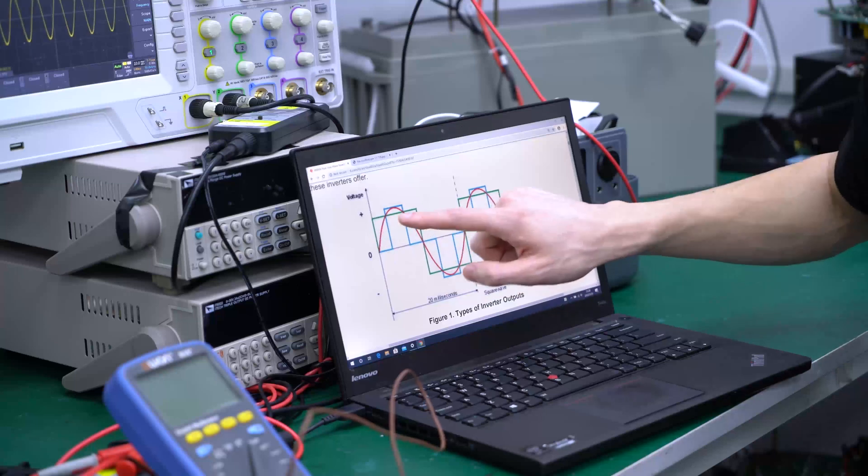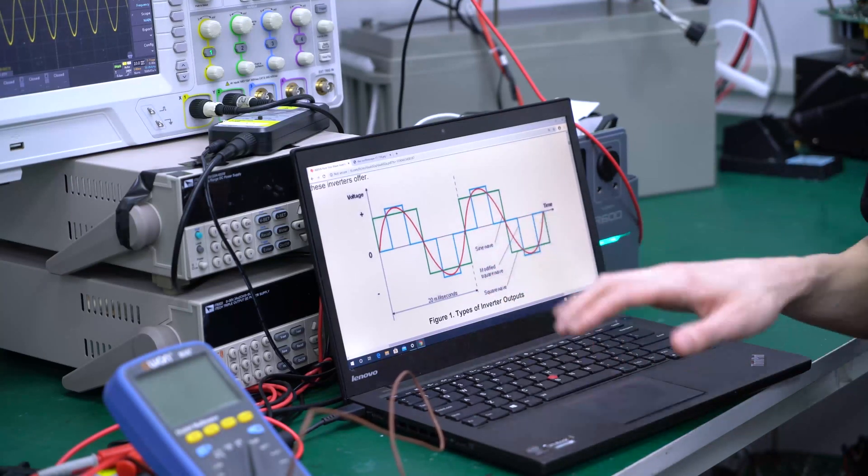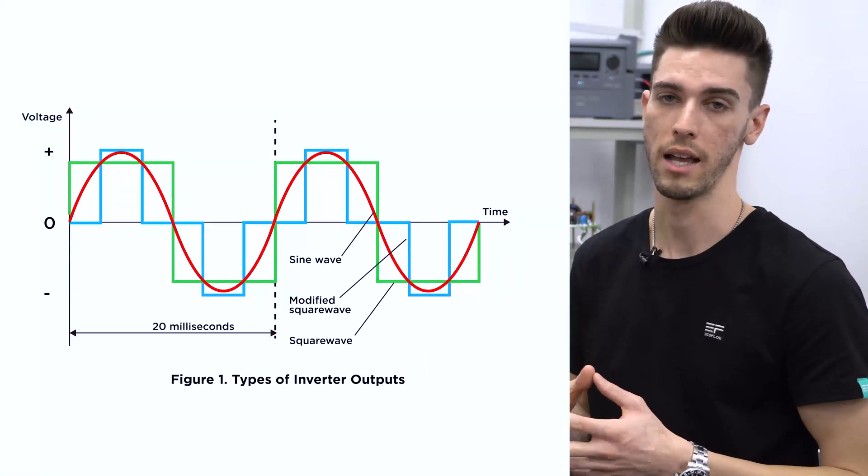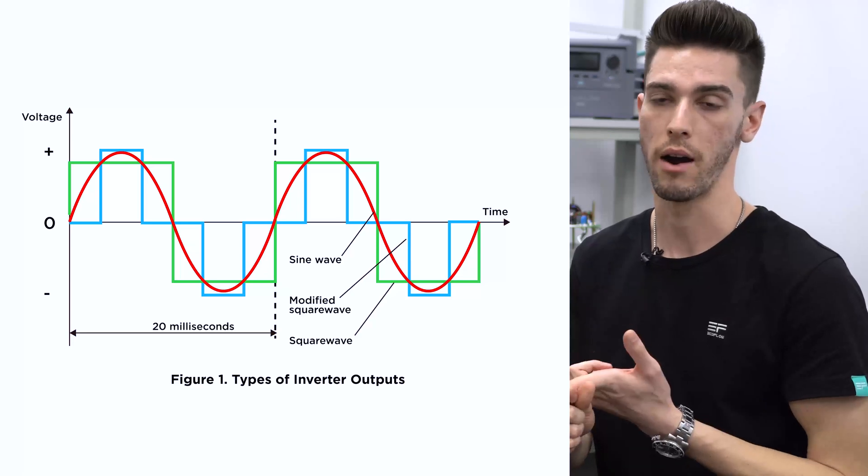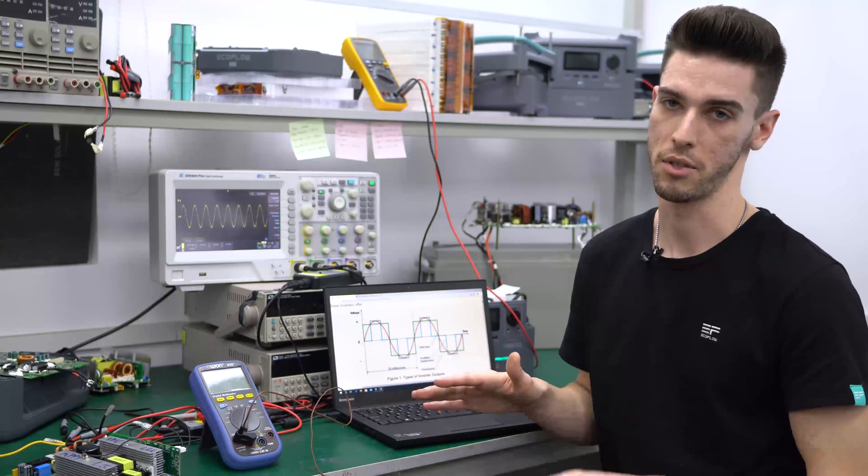All right, so this green line represents a square wave. The blue line represents a modified square wave. Now, these two inverter types are easier to manufacture. They also cost less, but they have some drawbacks like poor device compatibility, low power output, and high risk damaging electronics. So these are not a good option.